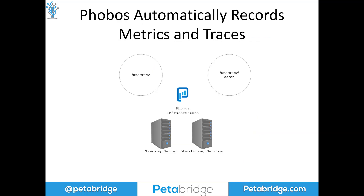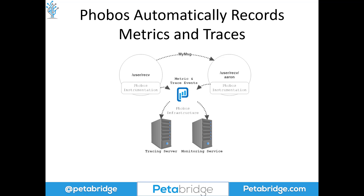Phobos automatically records metrics and traces as a result of actor interactivity. When one actor sends a message to another, we record an akka.actor.message.receive event with the type name of the message being sent, produce counter increments on the metric side, and generate traces — all exported via the OpenTelemetry infrastructure to your preferred tracing and monitoring service.